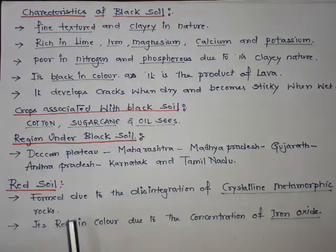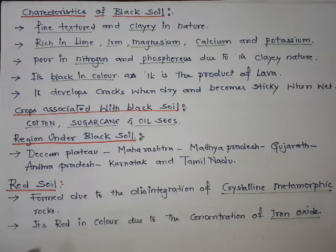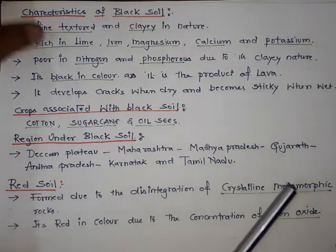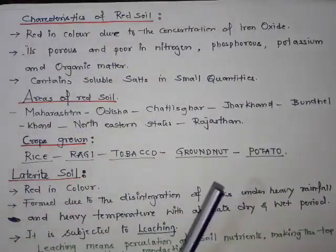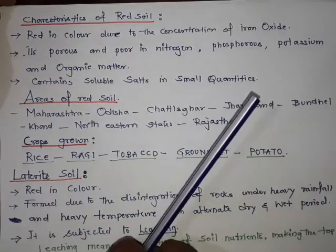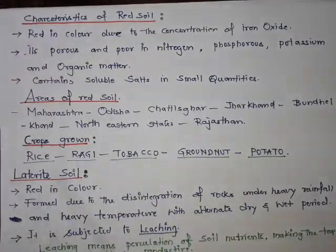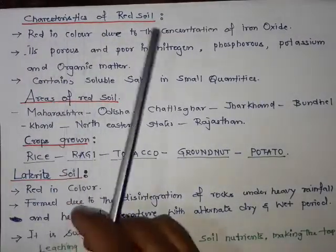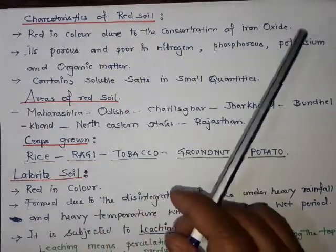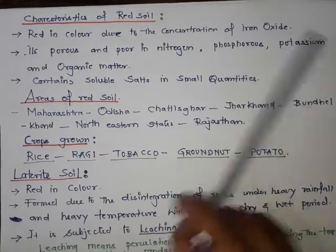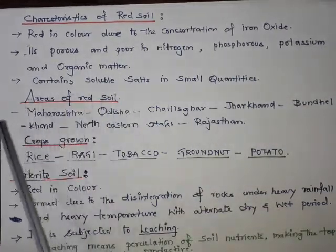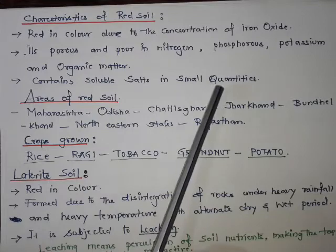Red soil is formed due to the disintegration of crystalline metamorphic rocks. It is red in color due to the concentration of iron oxide. Its characteristics include being porous and poor in nitrogen, phosphorus, potassium, and organic matters, and it contains soluble salts in small quantities.